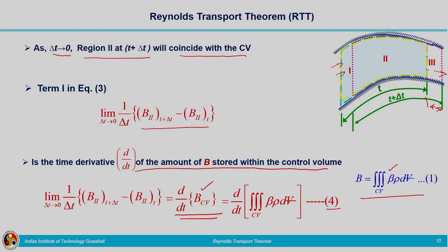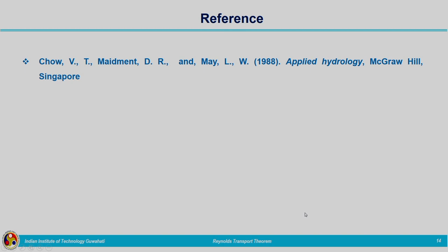So when talking about the time rate of change of extensive property stored within the system, it has been separated into two terms. The first term was found to be the time rate of change of extensive property within the control volume. This part of the derivation is taken from the textbook by Ven Te Chow and others, Applied Hydrology. The second term — Term 2 — will be seen in the next lecture.